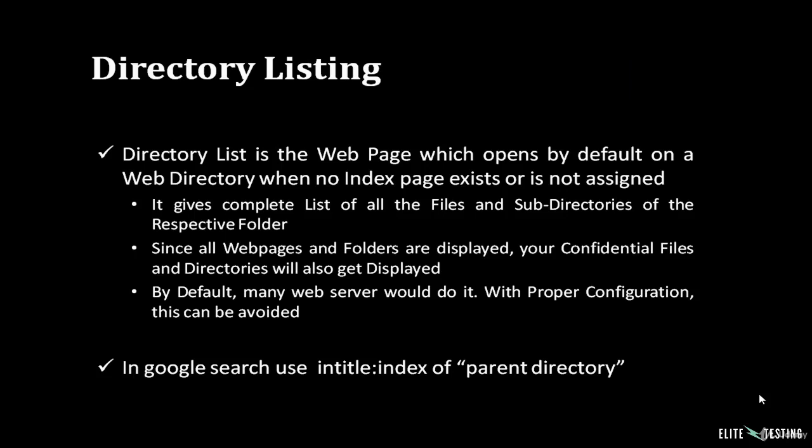We can also get useful information through directory listing. Directory listing is the webpage which opens by default on a web directory when no index page exists or no index page is assigned. It gives a complete list of all the files and subdirectories of a respective folder, meaning your confidential files and directories also get displayed by default. Many web servers do this, but with proper configuration it can be avoided.